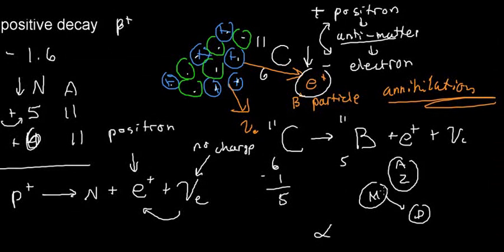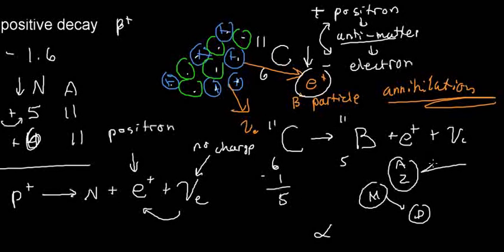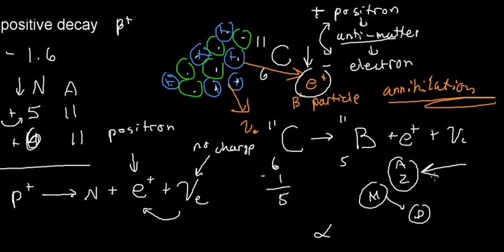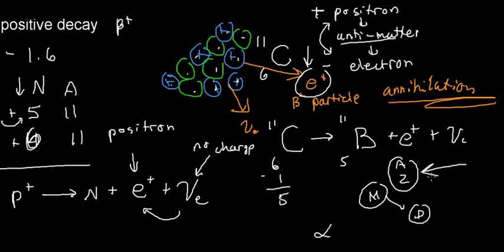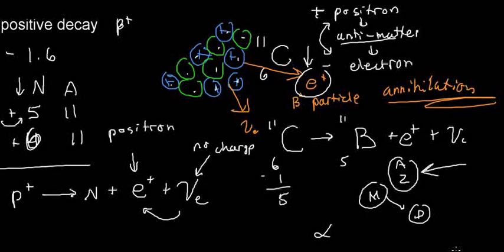The most important thing about understanding radioactive decay is understanding the differences that take place with atomic numbers and mass numbers. Hopefully you found this helpful — see you in the next video.